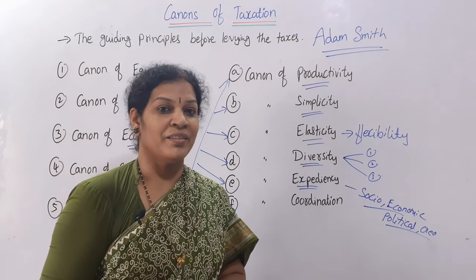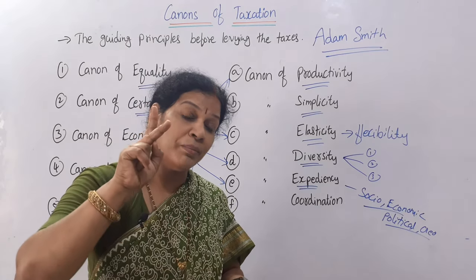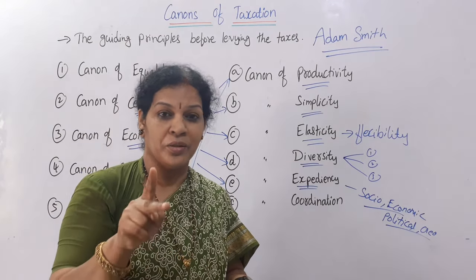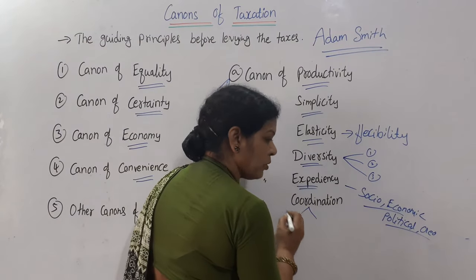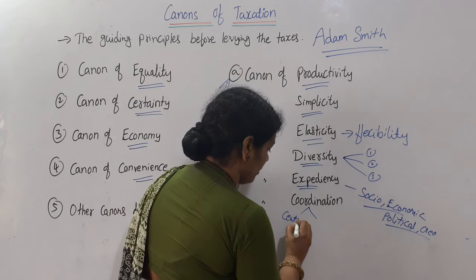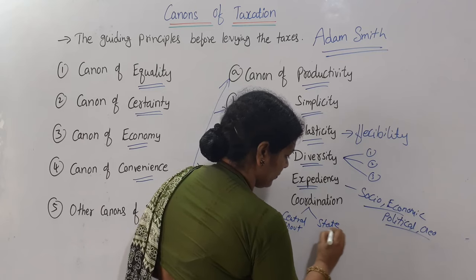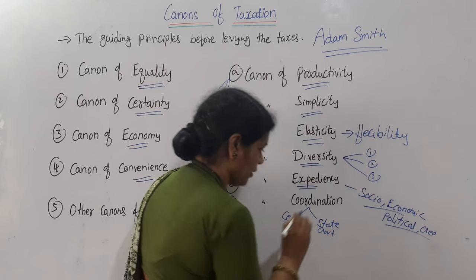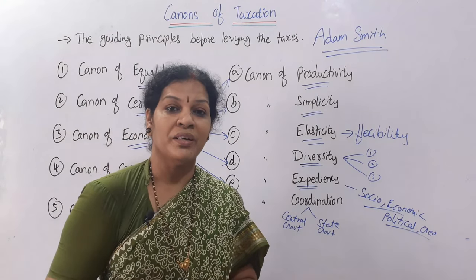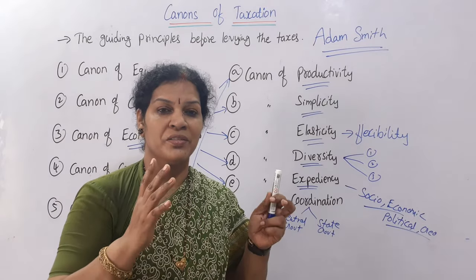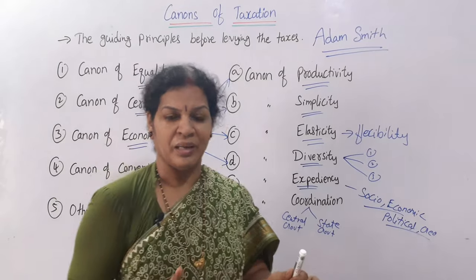The last canon is the canon of coordination. Since both the central government and state governments have authority to charge taxes, there must be very good coordination between them. Where there is good coordination between the central and state governments, that makes the best possible tax policy. This is what the canon of coordination emphasizes.